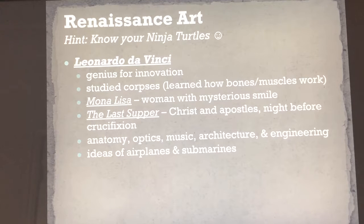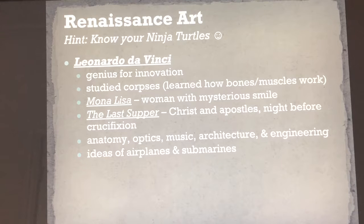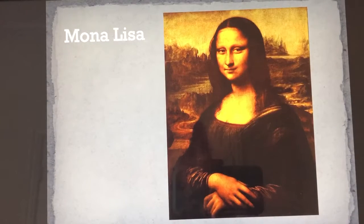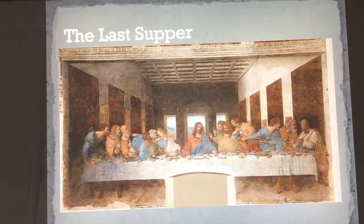We know our Ninja Turtles are named after Renaissance artists. Leonardo is going to be famous for focusing on bone structure and muscle structure, seen in his two paintings — the Mona Lisa and the Last Supper — which you will have to know for your tests. The Mona Lisa focuses on bone structure, and the Last Supper focuses on movement in the art.